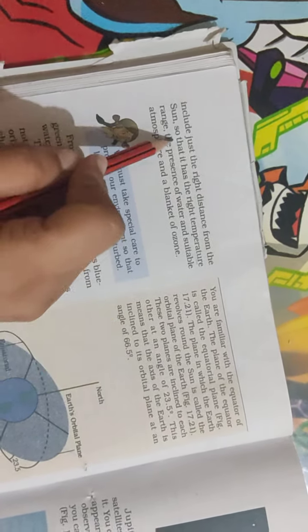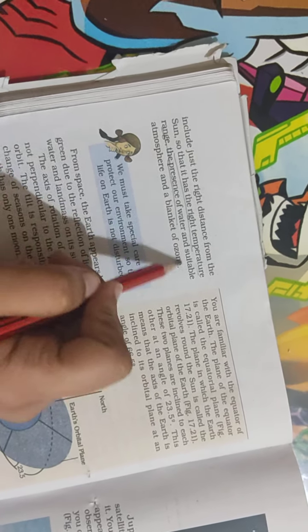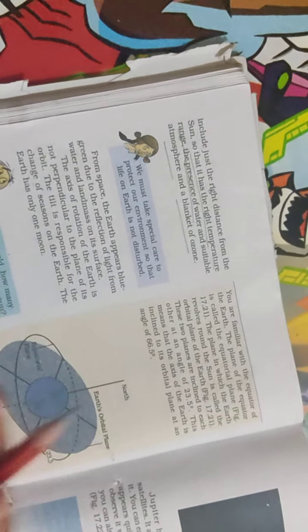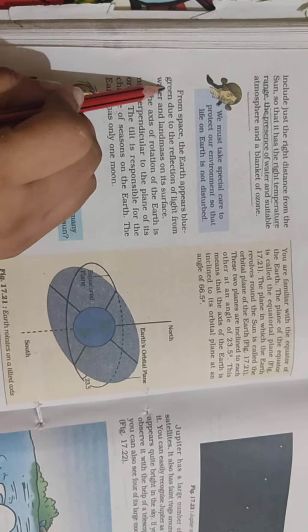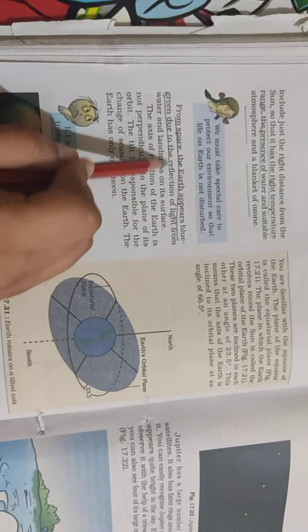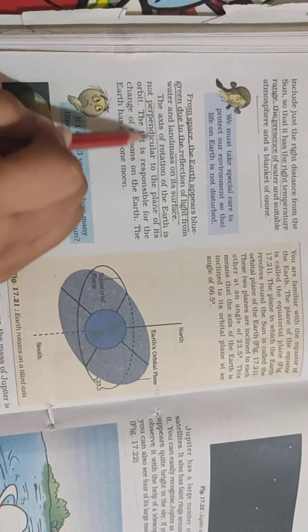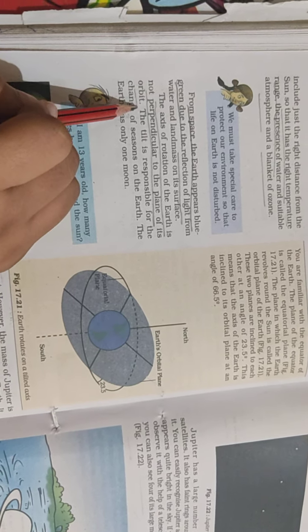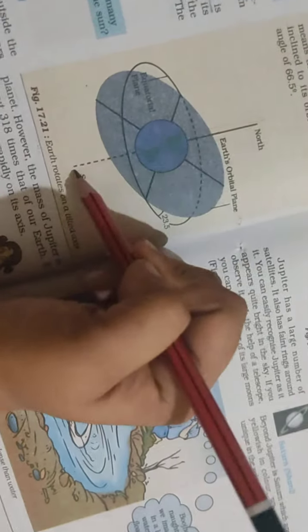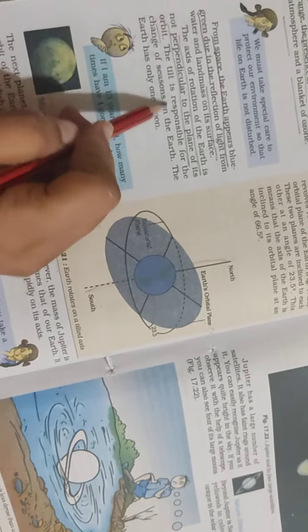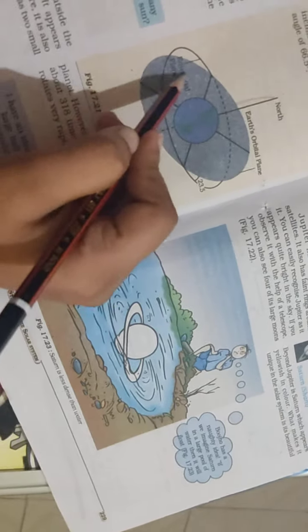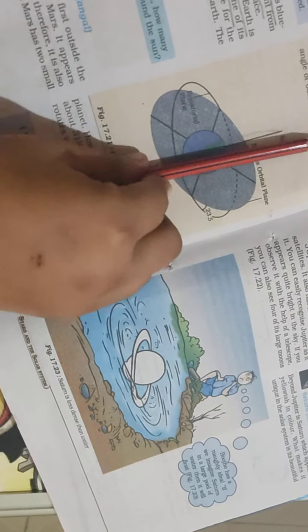Earth has the right temperature, pressure, water, and atmosphere that protects us from harmful sun rays. From space, Earth appears blue-green due to reflection of light. The axis of rotation of Earth is not perpendicular to the plane of its orbit—it is tilted. Earth has only one moon.